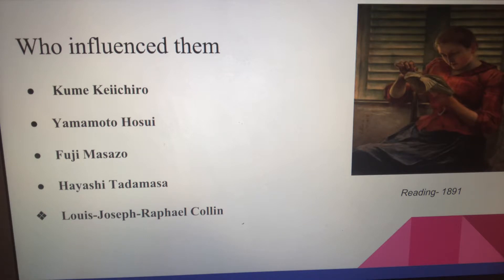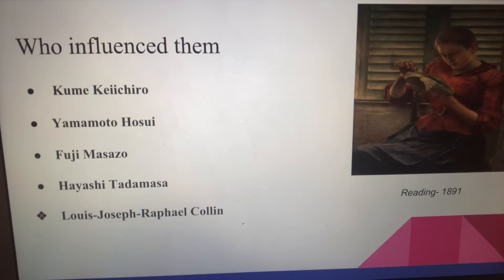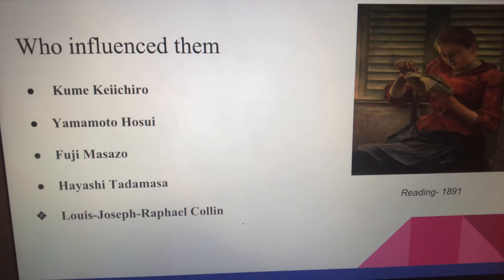Kume arrived in Paris at the same time as Kurodo and entered Colin's studio at the same time. Kume had first studied drawing under Fuji and ended up following him to Paris. Kurodo and Kume were the same age and pushed each other to create better paintings, becoming close friends over their lifetime. Yahamoto was one of the men who urged Kurodo to become a painter and to go to painting school, along with Kume, who also returned to Japan at the same time. Then Yahamoto gave them his school, and they renamed it the Tenshin Jojo and became its directors.